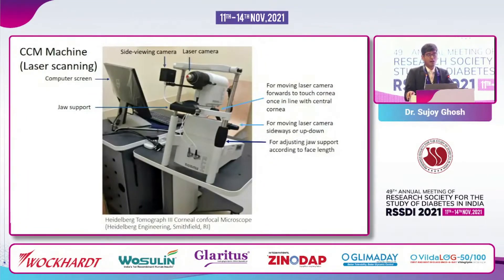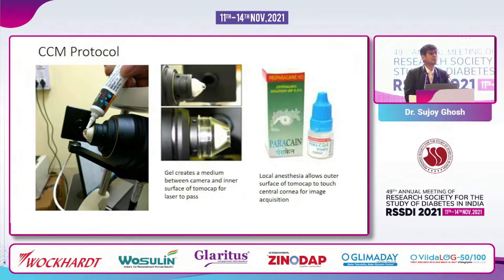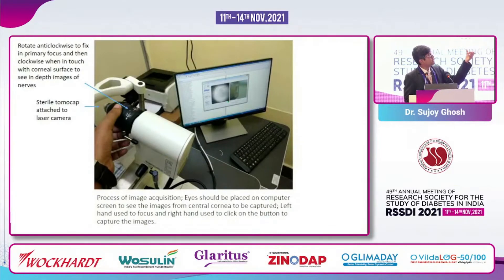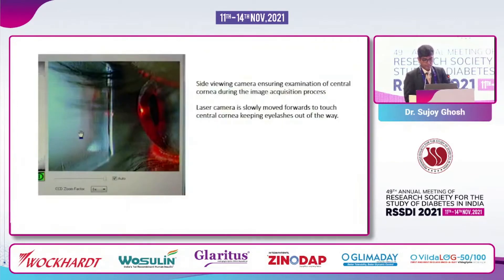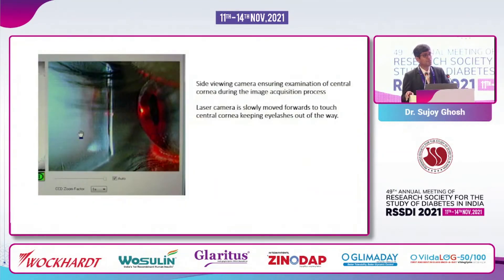This is the machine we've managed to procure in our own institute — a corneal confocal microscope. It looks similar to a slit-lamp microscope, but the difference is there's a laser camera. You put a gel on the camera, a disposable tomo cap on top, and an anesthetic drop in the eye of the patient. The patient leans forward with the chin, and you adjust the focal length of the camera to get a good image on the screen. There is also a side-viewing camera to ensure the laser is pointing on the central point of the cornea.